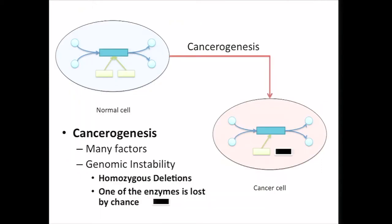Of course, this is what happens inside a normal cell. But we are interested in what happens in a cancer cell. On its way for a normal cell to become a cancer cell, there are lots of things happening. The one we are particularly interested in are the homozygous deletions that happen due to genomic instability of these cancer cells. I'm depicting a homozygous deletion that just by chance affected one of the enzymes.